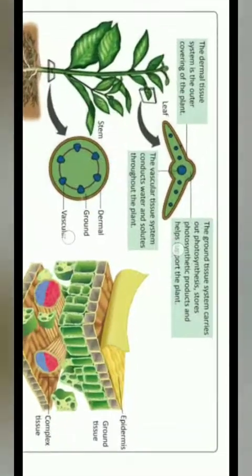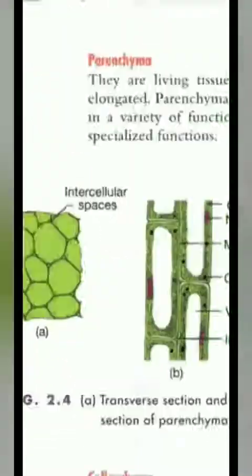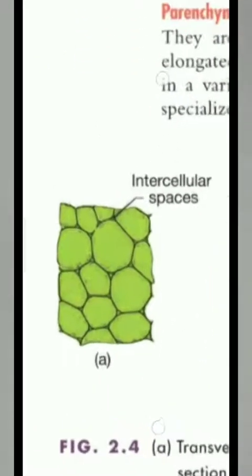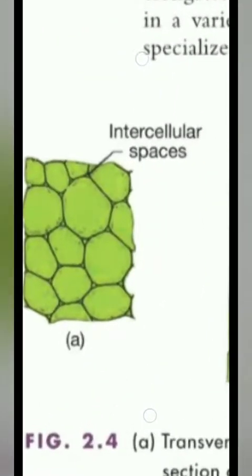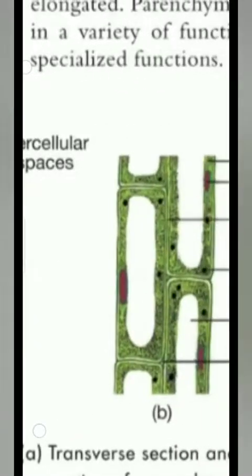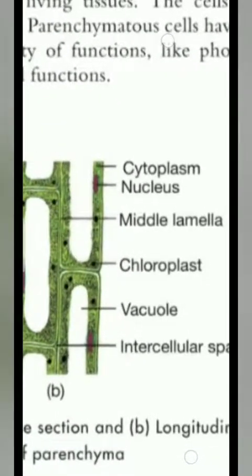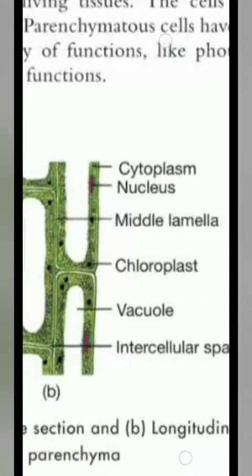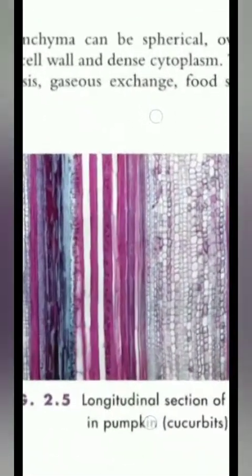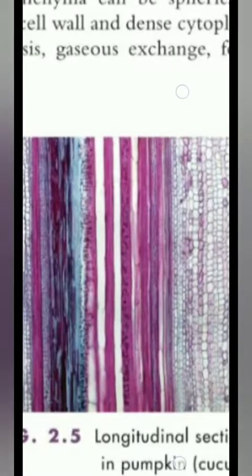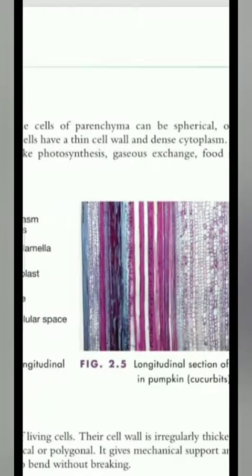Parenchyma tissue is found in the soft parts of the plant. The cells are oval or polygonal with very little space between them, and they have thin cell walls and a very large vacuole. They are separated by intercellular spaces and some contain chlorophyll. They store food material and form the ground tissue.